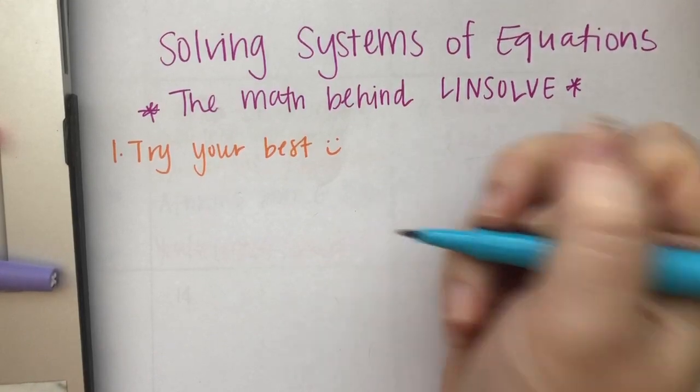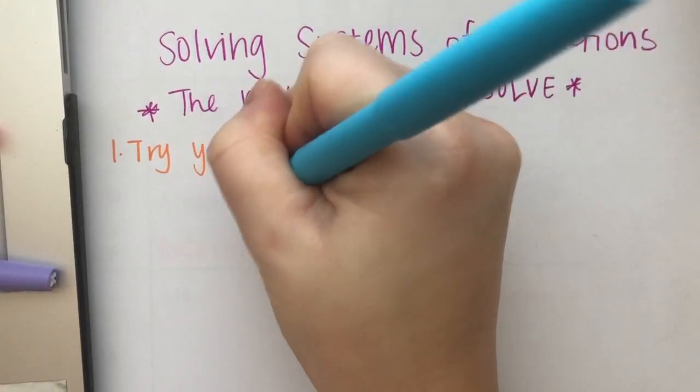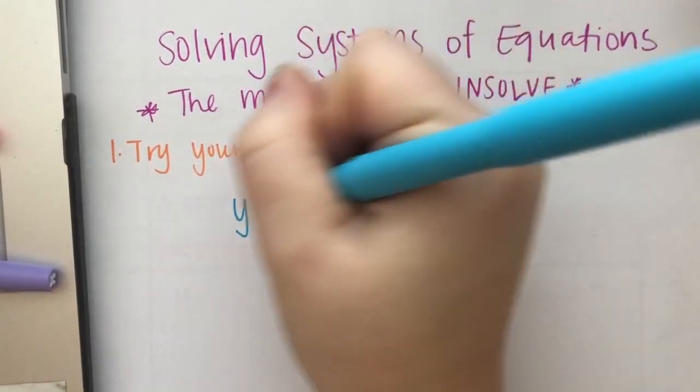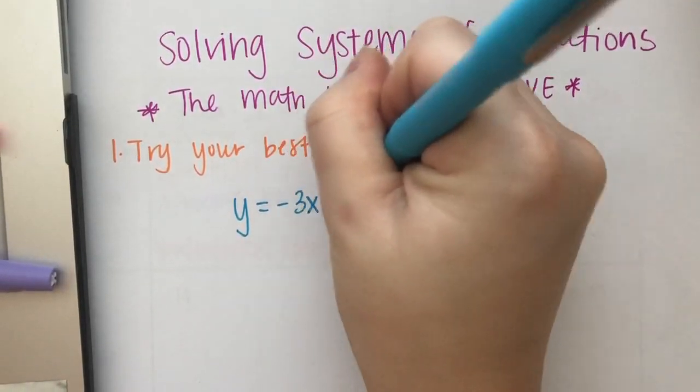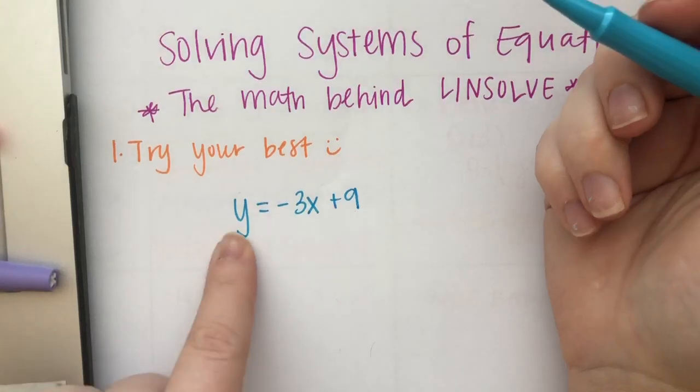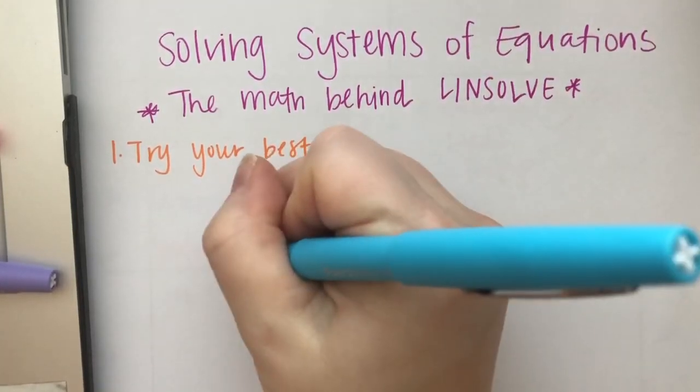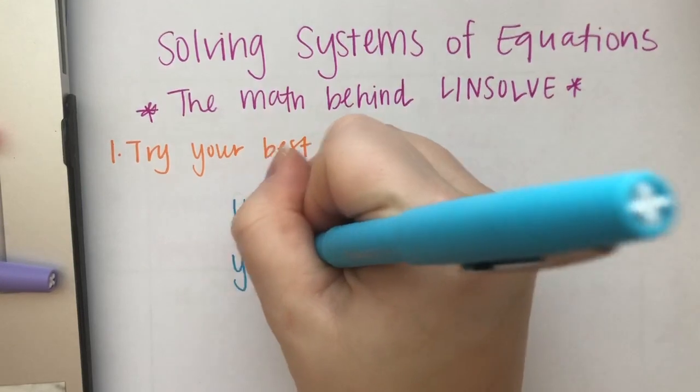So we're only going to do one problem in this video, so if you'll write this down with me, our system is going to be this: y equals negative 3x plus 9, so this is in slope-intercept form y equals mx plus b. The other is y equals 4x plus 2.